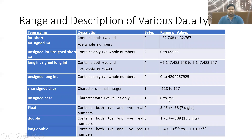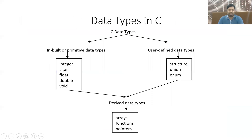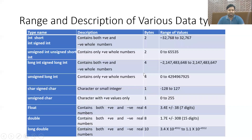This table gives insight into various inbuilt data types. Broadly, we have four types: integer, character, float, and double — void is rarely used. An integer takes two bytes of memory, and its value ranges from -32,768 to +32,767, using 16 bits.